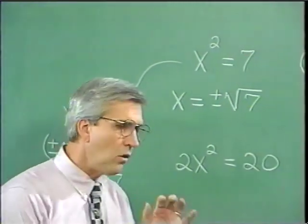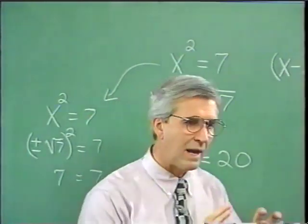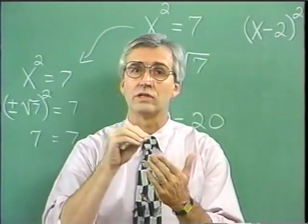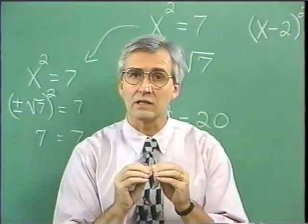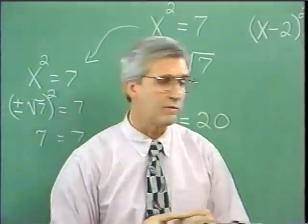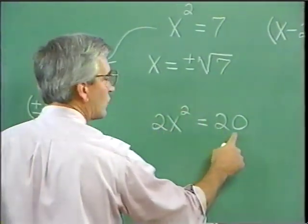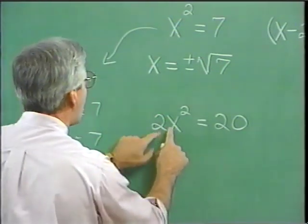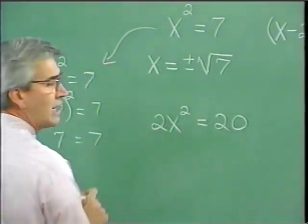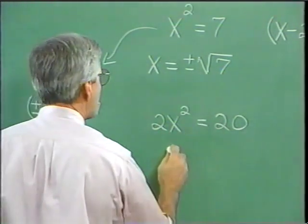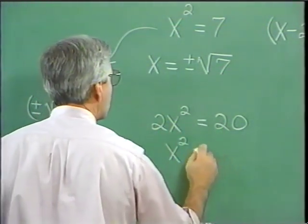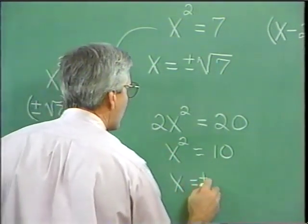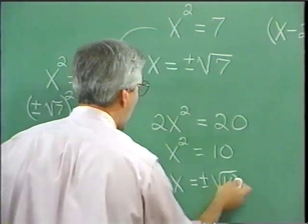In order to solve by extracting square roots, the variable quantity that is squared should be isolated on one side of the equation. Here we have 2x squared equals 20. We isolate x squared by dividing both sides by 2, finding x squared equals 10. Then, by extracting square roots, x is plus or minus the square root of 10 — our two solutions.